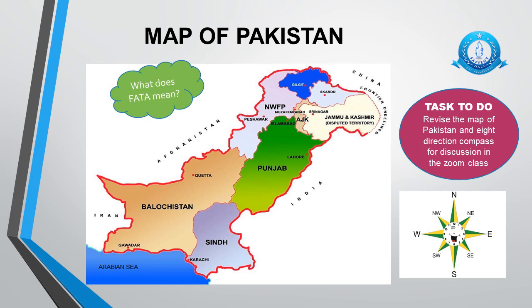Let's discuss our neighboring countries. India is towards east, Iran is towards west. Afghanistan is between north and west, so its direction is northwest. And China is between north and east, so its direction is northeast.